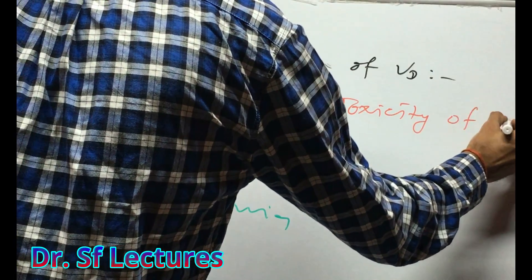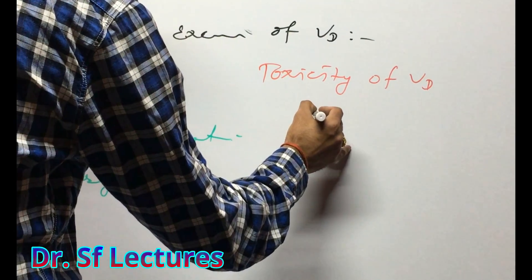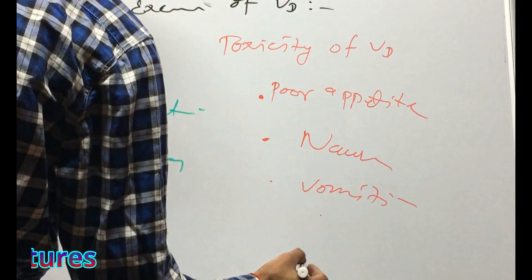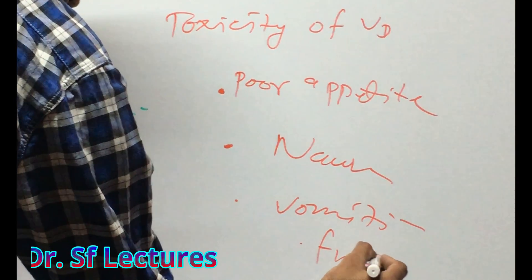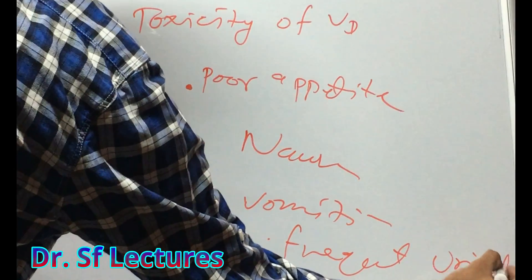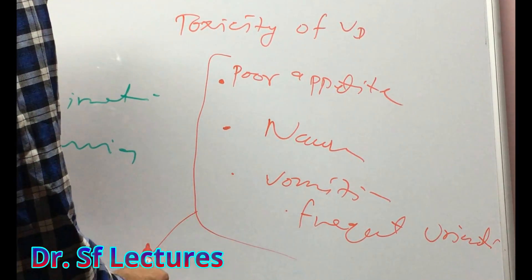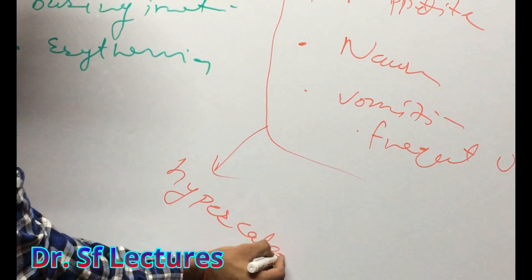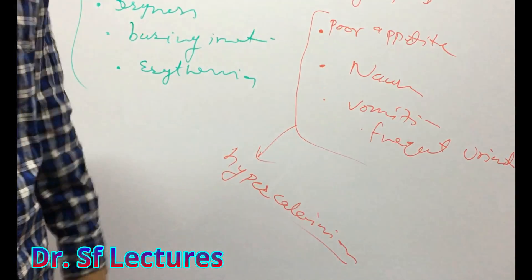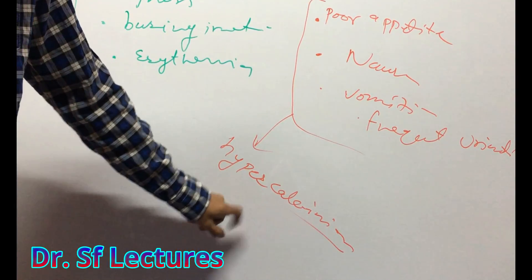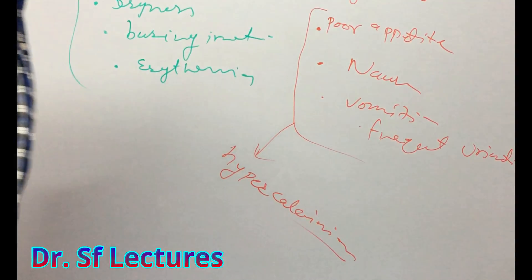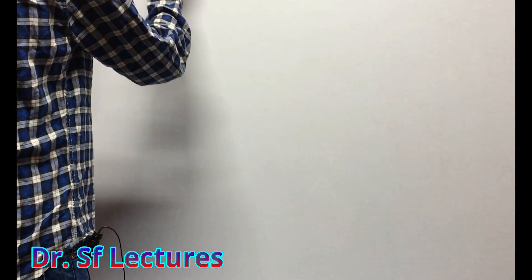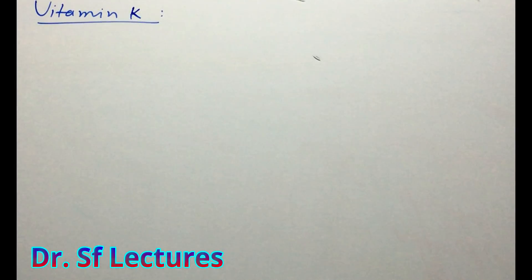The toxicity of Vitamin D includes poor appetite, nausea, vomiting, and frequent urination. These are all symptoms of hypercalcemia. So the toxicity of Vitamin D can cause hypercalcemia. The symptoms of hypercalcemia are nausea, vomiting, frequent urination, and poor appetite.